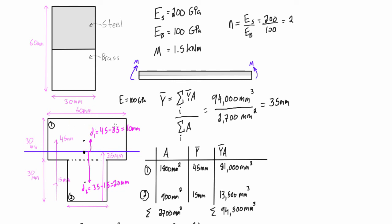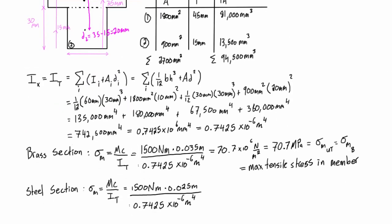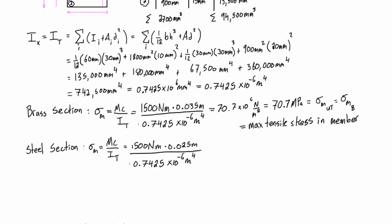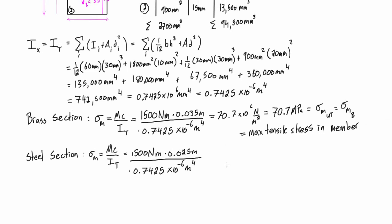So, if we just run this, we end up getting 50.5 times 10 to the 6 newtons per meter squared, and this is megapascals, so we get 50.5 megapascals.